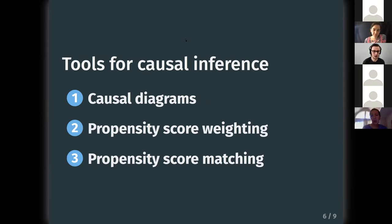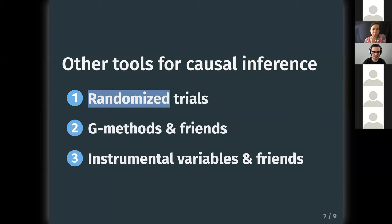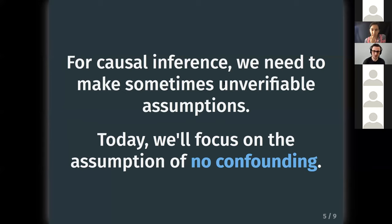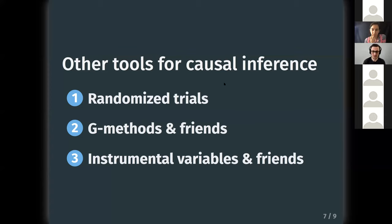The tools we're focusing on today are causal diagrams and propensity score weighting. A closely related tool is propensity score matching, which we'll touch on briefly. One of our best tools for causal inference is the randomized trial, which handles the required assumptions very well. There's also a set of methods called g-methods, and another set called instrumental variables, which includes difference-in-differences and regression discontinuity — common in econometrics and program evaluation.